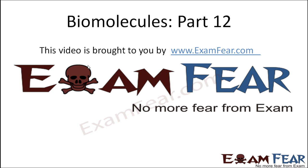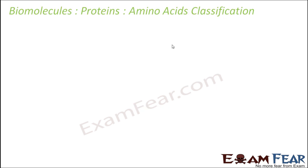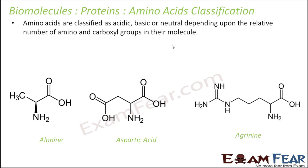Hello friends. This video on biomolecules part 12 is brought to you by examfew.com. Now let us look at the classification of amino acids — what are the different types of amino acids? Amino acids can be classified as acidic, basic, or neutral depending upon the relative number of amino and carboxyl groups in their molecule.